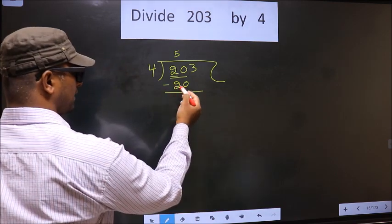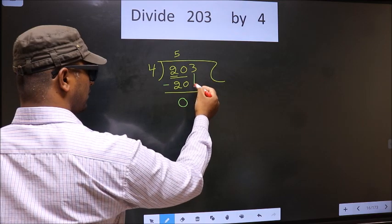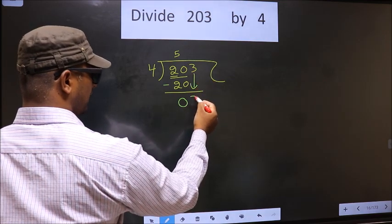Now, you subtract. 20 minus 20 is 0. Now, you bring down the beside number 3 down.